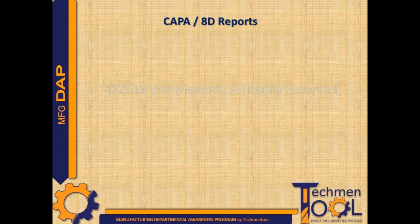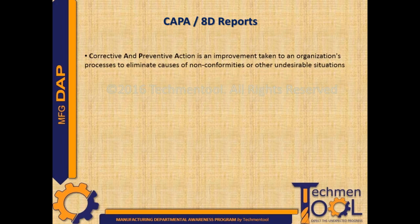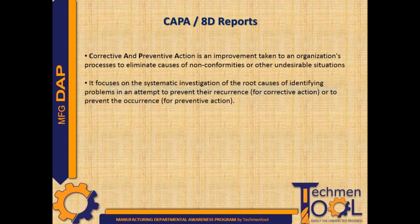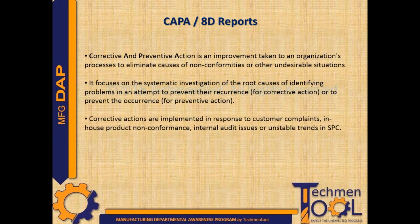What is meant by CAPA or 8D reports? CAPA is an improvement taken to an organization's processes to eliminate causes of non-conformities or other undesirable situations. It focuses on systematic investigation of the root causes of identified problems in an attempt to prevent their recurrence for corrective action, or to prevent the occurrence for preventive action.